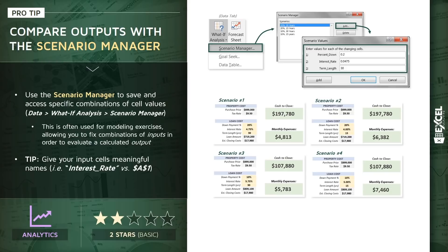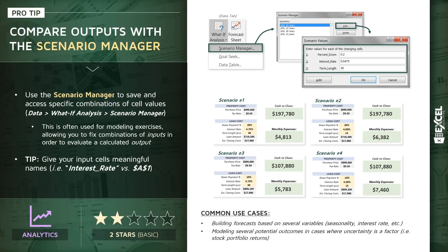This is a great tool for quickly evaluating the impact of different combinations of input values. Common use cases include building forecasts based on several variables that may change, like seasonality or interest rate, or modeling several potential outcomes in cases where uncertainty or risk is a factor — for instance, creating a scenario for low risk, medium risk, or high risk to predict your stock portfolio returns. With that, let's jump into Excel and create some of these scenarios for ourselves.